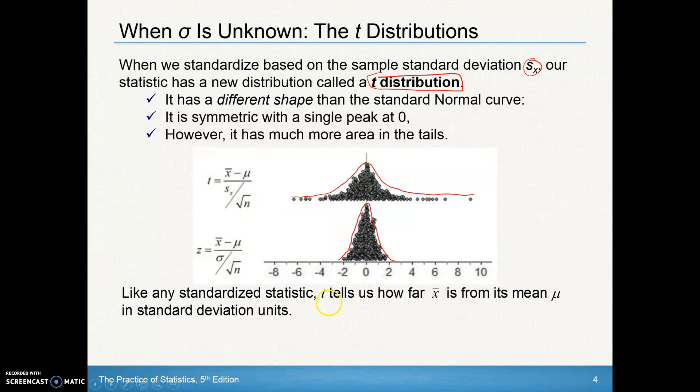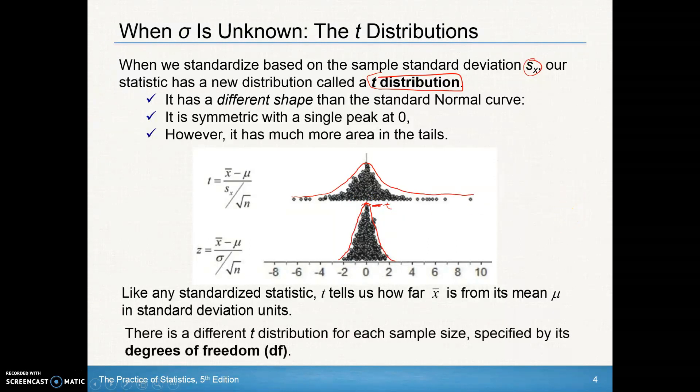But like any standard statistic, the t tells us how far x-bar is from its mean mu in standard deviation units. We looked at how many z units would be away from that mean. T does the same thing. It's how many standard units away from that mean. There is a different t-distribution for each sample size, so we have to understand what degrees of freedom are. We have to learn how to take into account when you have different sample sizes, how that will change our t-distribution based on our degrees of freedom.